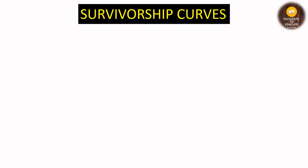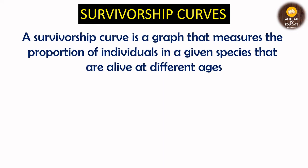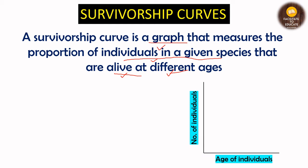Let us see what a survivorship curve is. The survivorship curve is a graph that measures the proportion of individuals in a given species. It considers a population that are alive at different ages, telling us how many individuals are alive at each age. On the x-axis we take the age of individuals, and on the y-axis we take the number of individuals.